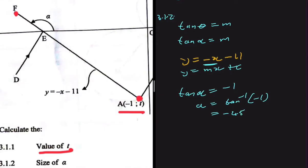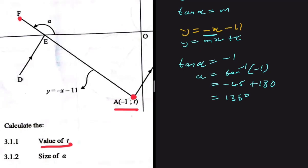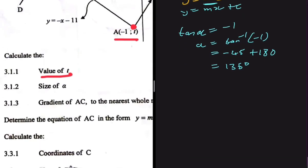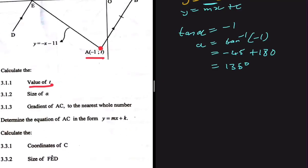Since the angle is negative, we add 180 degrees. Adding 180 to minus 45 gives 135 degrees. So the size of that angle of inclination is 135 degrees, using the fact that tan of theta equals the gradient of the line. Moving on to 3.1.3.